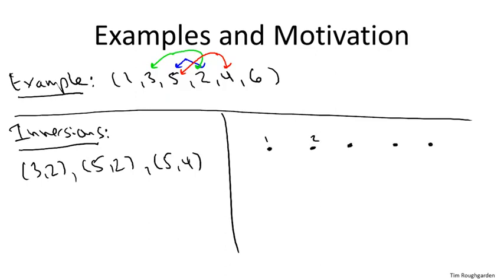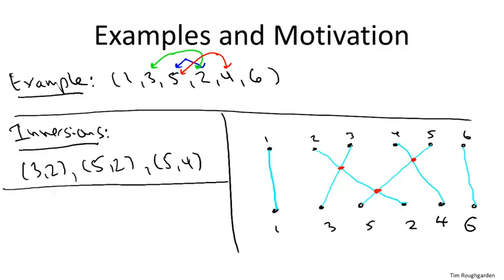Pictorially, we can think of it thusly. We can first write down the numbers in order, one up to six. And then we can write down the numbers again, but ordered in the way that they're given in the input array. So one, three, five, two, four, six. And then we can connect the dots, meaning we connect one to one. We connect two to two. And so on. It turns out, and I'll leave it for you to think this through, that the number of crossing pairs of line segments precisely correspond to the number of inversions. So we see that there are one, two, three crossing line segments. And these are exactly in correspondence with the three inversions we found earlier. Five and two, three and two, and five and four.